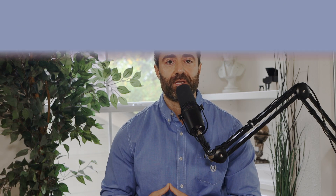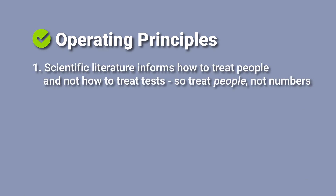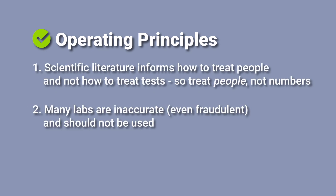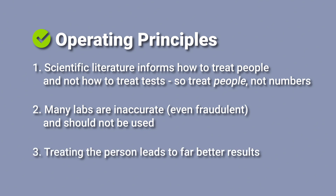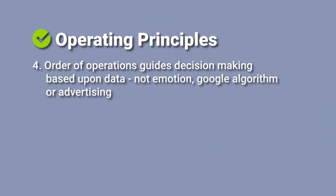Coming back to our operating principles, we've covered how the science really informs how to treat people — not labs — and how many labs are inaccurate and we get far better results when we treat the person, not the labs. Three other principles round this out. An order of operations guides decision-making based upon data, not based upon emotion, the Google algorithm, or advertising.